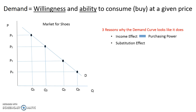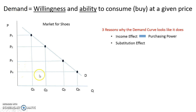Another reason why the demand curve is downward sloping is the substitution effect. In the market for shoes, if the price is high, then the quantity demanded is going to be low because I can find a substitute — maybe flip flops or sandals at a lower price. However, if the market price for shoes is low, then I'm not going to find another substitute I'd choose, and so the quantity demanded will go up.